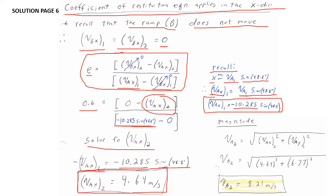Finally, we find the magnitude of the ball's velocity after impact: V_A2 = √(V_AX2² + V_AY2²) = √(4.64² + 6.77²). Taking the square root gives V_A2 = 8.21 meters per second. This is the speed at which the ball bounces from the inclined plane, answering the second part of the problem.